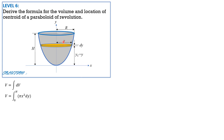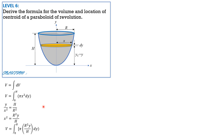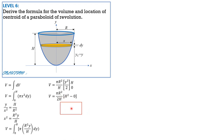To derive x², we use the squared property of the parabola: y is to x² equals h is to R². So x² equals R²y over h. Substituting, volume equals the integral from 0 to h of π R²y over h dy. Since R², h, and π are constants, we only evaluate y dy which is y²/2. So volume equals π R²/h times h²/2, giving volume equals π R² h over 2.